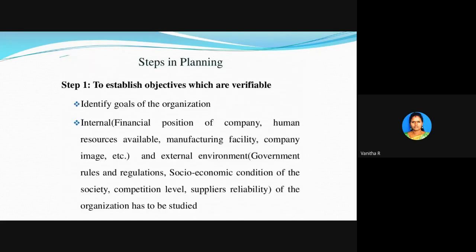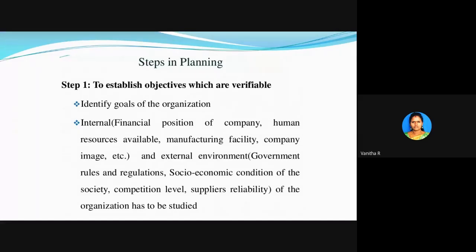Step 1 is to establish objectives which are verifiable. First, identify the goal of the organization. You also need to study the internal and external environmental rules and regulations. Internal environment means the financial position of the company, human resources available, manufacturing facility, and company image. External environment means government rules and regulations, socio-economic conditions of the society, competition level, and supplier reliability. Both internal and external environments of the organization have to be studied thoroughly.